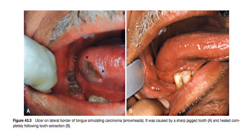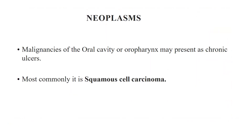This is a picture of a tongue ulcer on the lateral border, most likely due to jagged teeth. However, it does not look very healthy and is simulating a carcinoma; a biopsy is needed to rule out carcinoma. Malignancies of the oral cavity or oropharynx may present as a chronic ulcer, most commonly of the squamous cell variety.